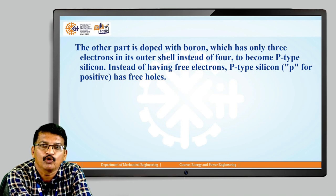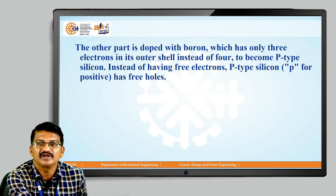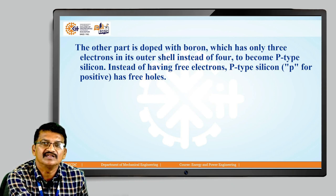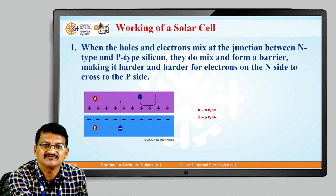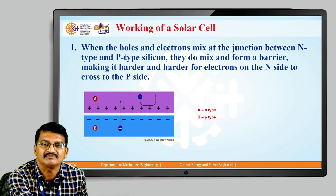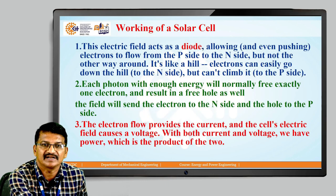The other part is doped with boron, which has only 3 electrons in its outer shell instead of 4, to become p-type silicon. Instead of having free electrons, p-type silicon has free holes. When the holes and electrons mix at the junction between n-type and p-type silicon, they form a barrier making it harder and harder for electrons on the n-side to cross to the p-side.